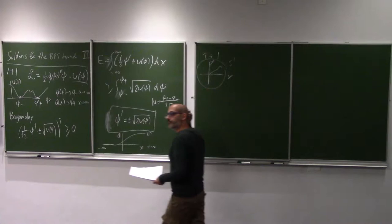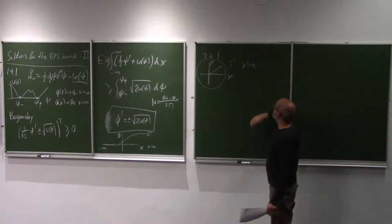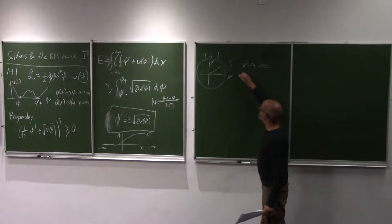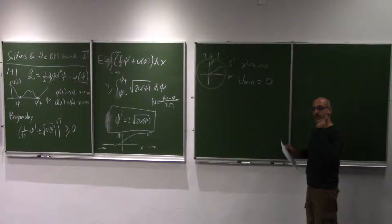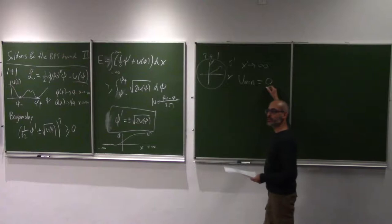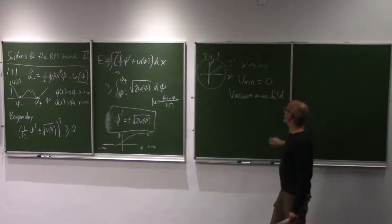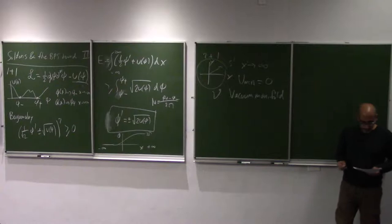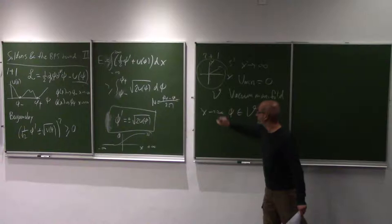The solutions for phi for which the potential gets minimized at infinity is known as the vacuum manifold, which we can call V. Basically, we want that as x_i goes to infinity, phi belongs to this vacuum manifold. As x goes to infinity, we want phi to belong to V. This is the same thing as in 1D — I want phi to be a solution at the boundary — but now generalized to more dimensions. The interesting part is that this vacuum manifold can have non-trivial structure.